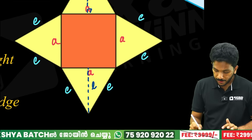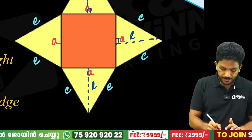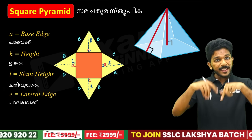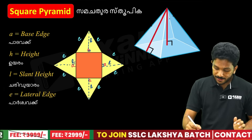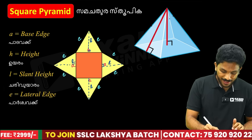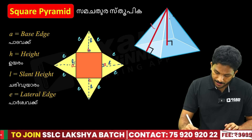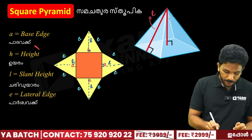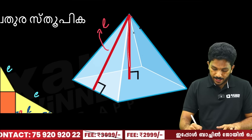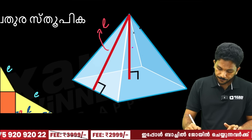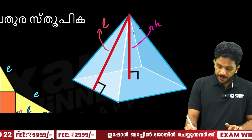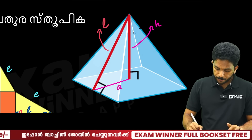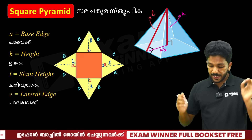Now, this is L — the slant height. This is the 90-degree height H. If you look at the same shape, L is the slant height and H is the vertical height. Looking at the base, the half-base is A by 2.